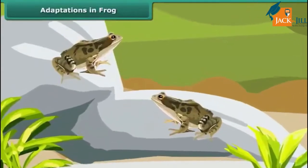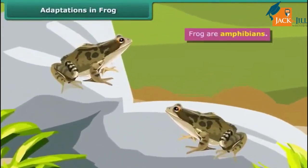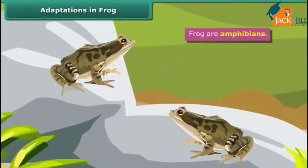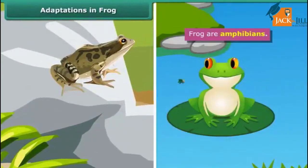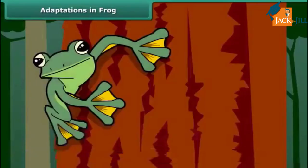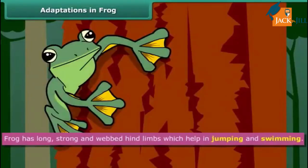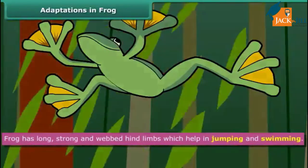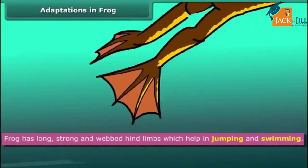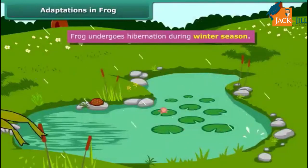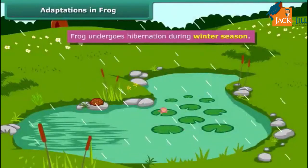We all know that frogs are amphibians. They can live both on land and in water, so they have specially developed features that allow them to live in both environments. Frogs have long, strong, and webbed hind limbs that help in jumping and swimming. Frogs also undergo hibernation during the winter season.